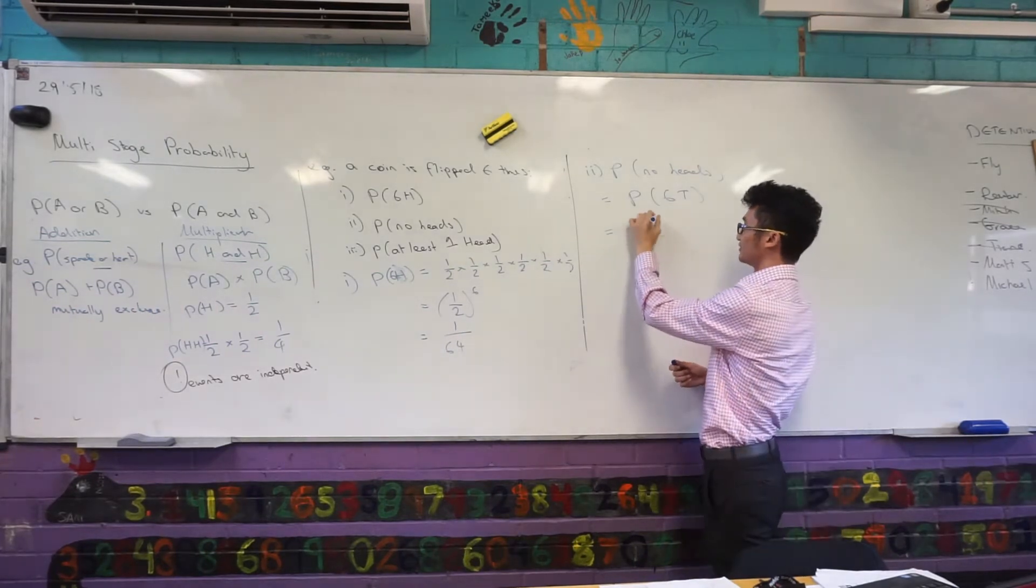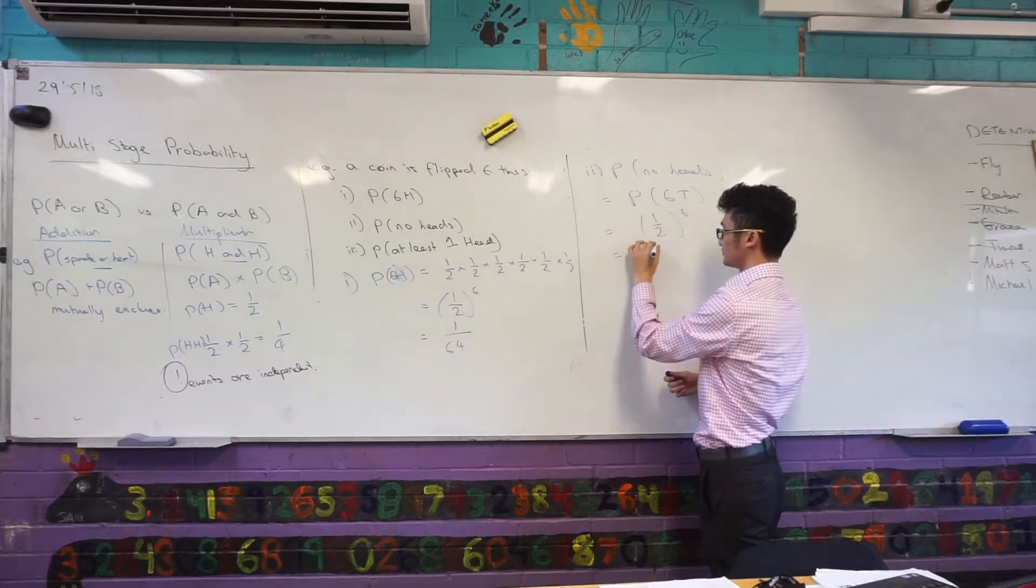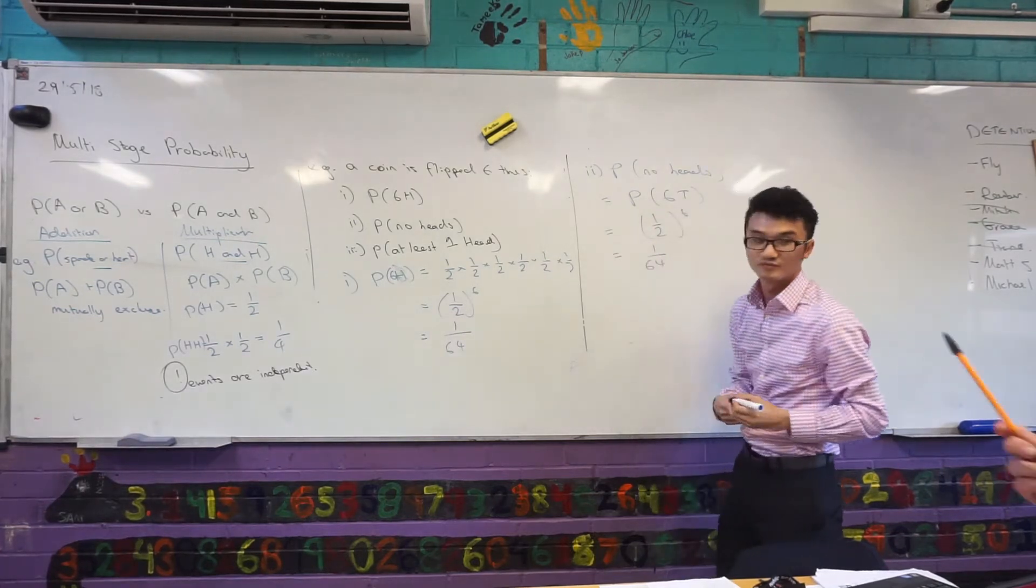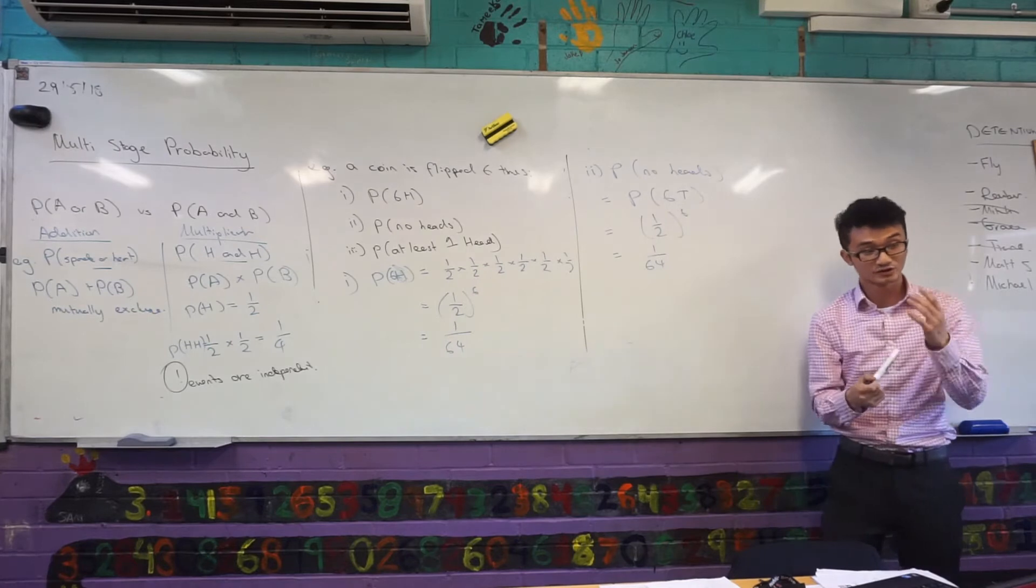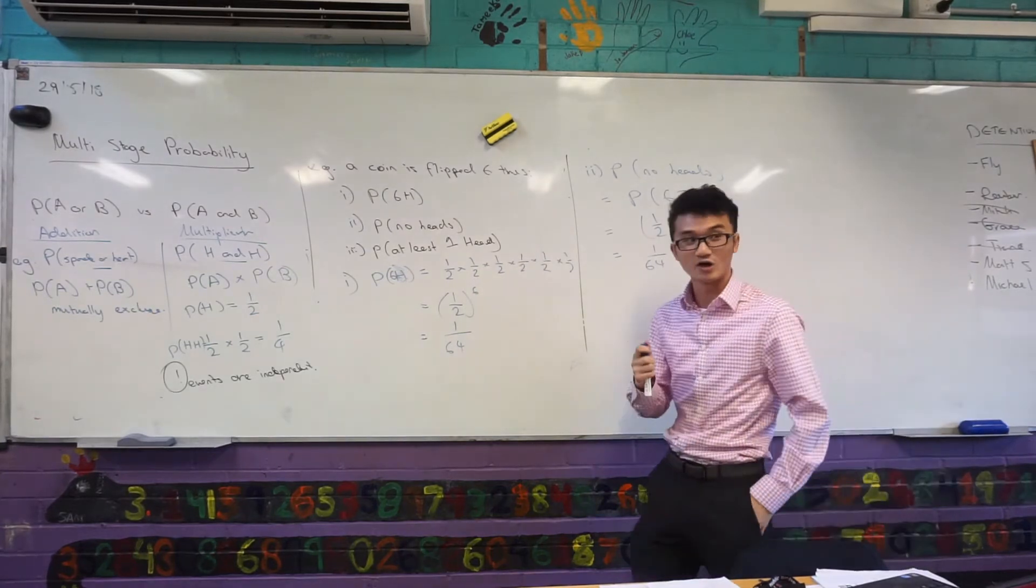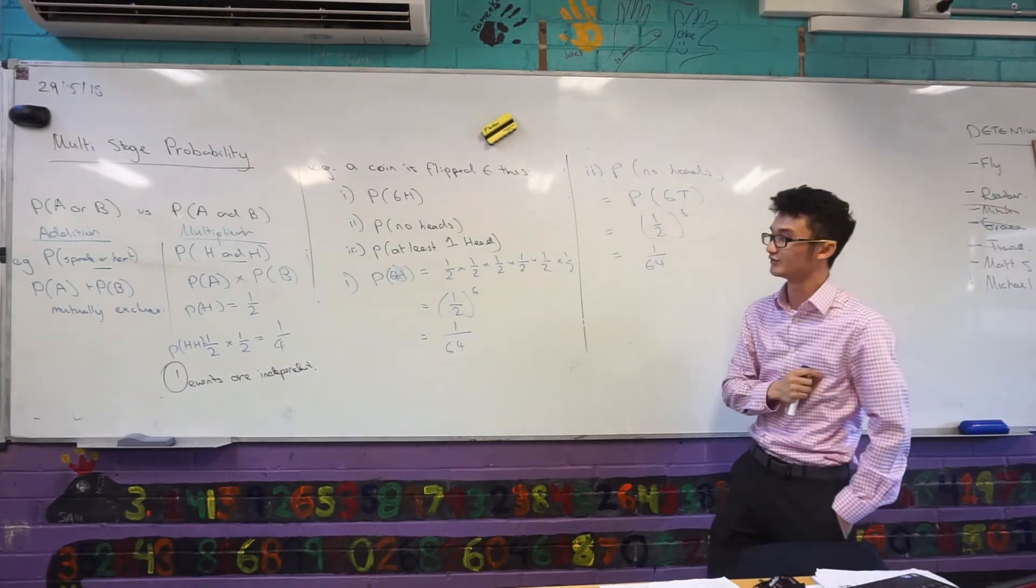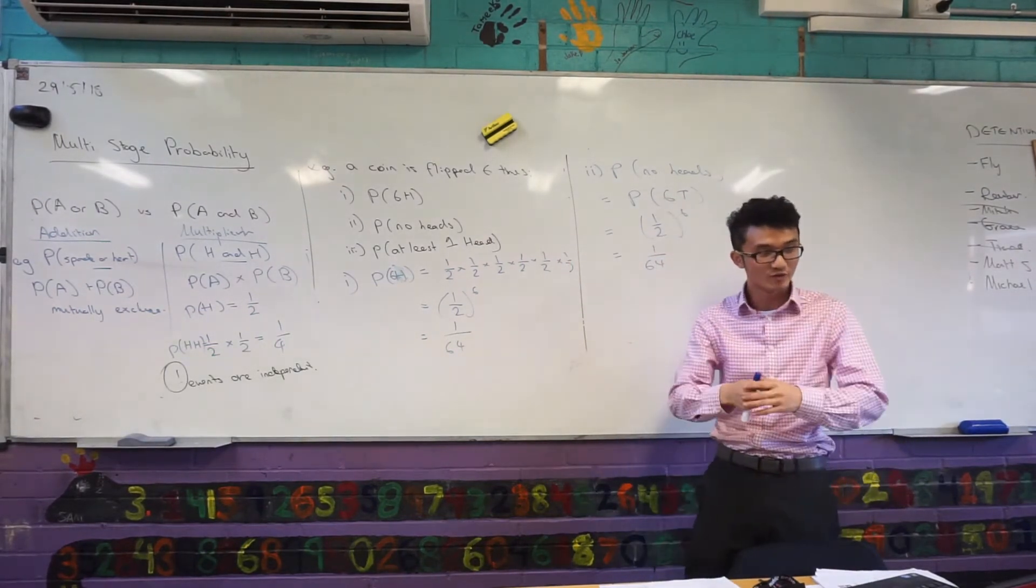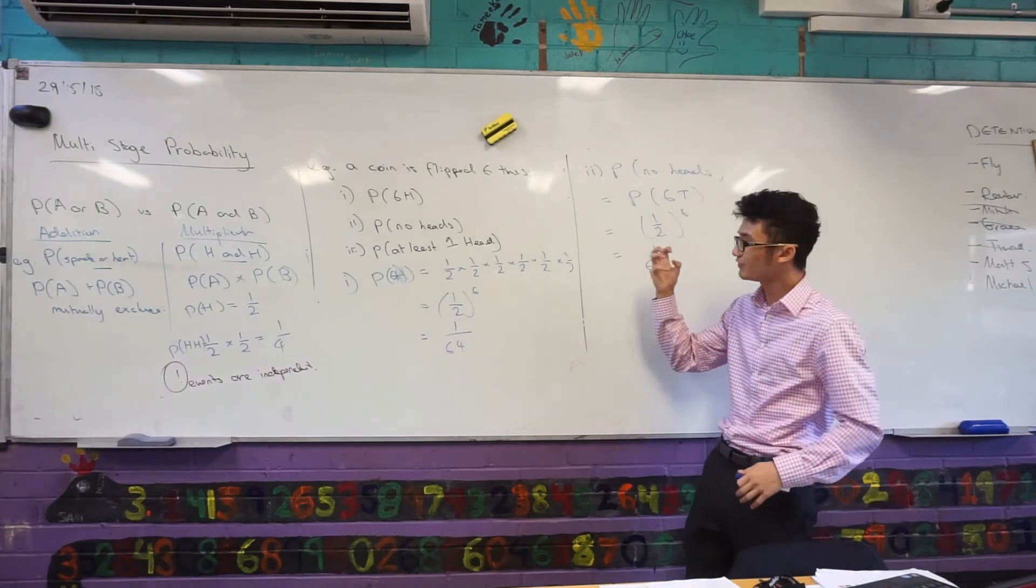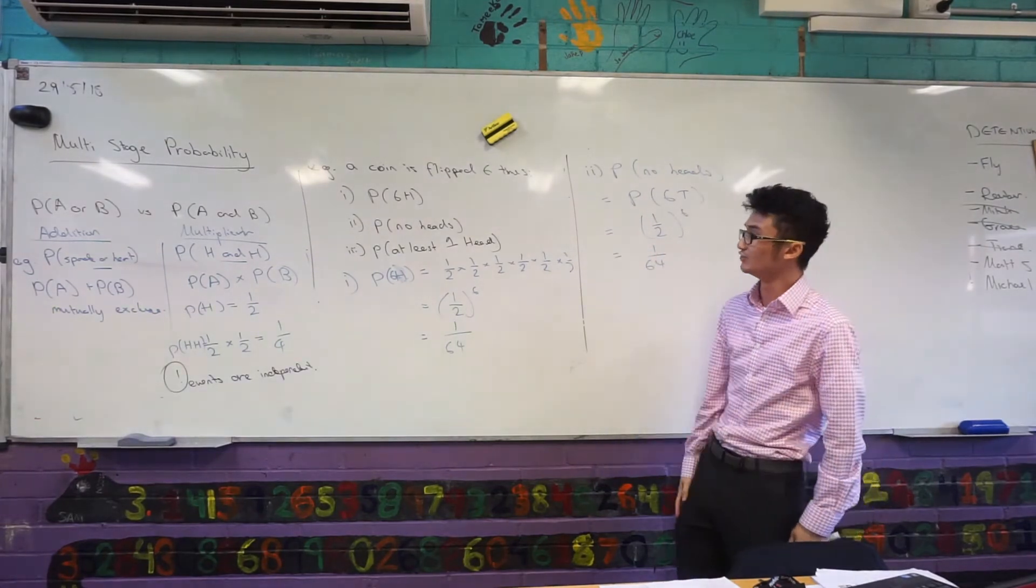It's just half to the power of six. The no heads thing was going to be the same, like the opposite of the six heads. Right, we're talking about the complements here. Now, complements I use in certain scenarios, and this is where I need to know when to use them. This is why I say probability can be tricky. We have all these different tools here, but I want to think about when I can use each one.